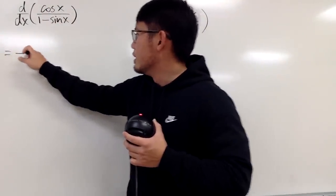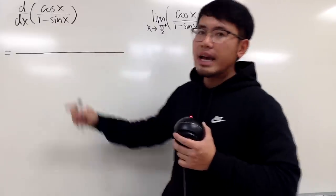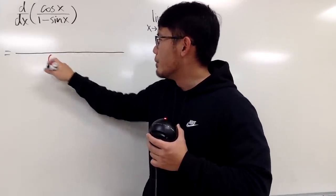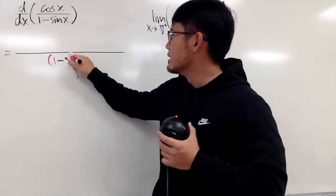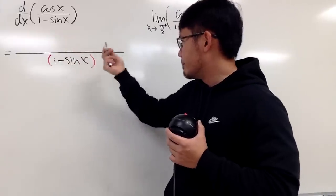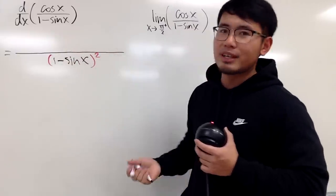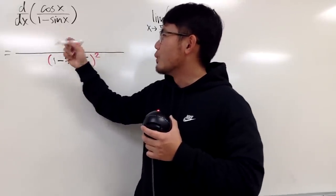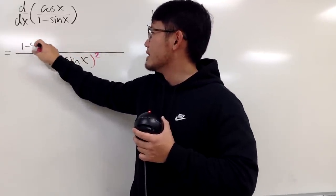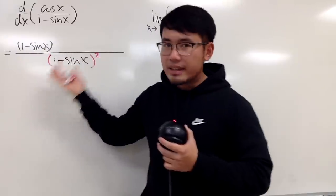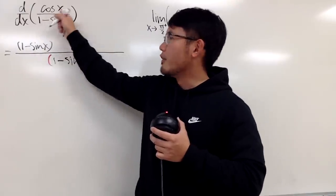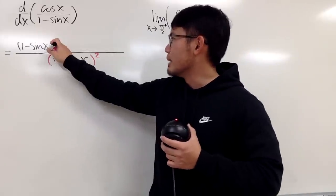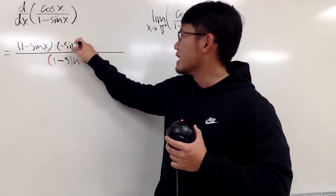So let's get that going. Let me write down the fraction bar, and don't forget to square the denominator right away. So I will put down 1 minus sine x in this pink parentheses, and then you raise that to the second power. For the top, you are going to write down the bottom function, which is 1 minus sine x, and then multiply by the derivative of the top. The derivative of cosine x is negative sine x, so you multiply by negative sine x.